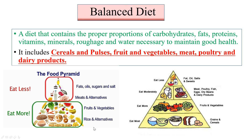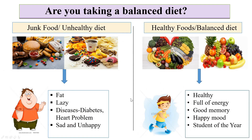Now we'll study about balanced diet. A balanced diet is one that contains proper proportions of carbohydrates, fats, proteins, vitamins, minerals, roughage, and water — all necessary to maintain good health. It includes cereals and pulses, fruits and vegetables, meat, poultry, and dairy products. For a balanced diet, eat more of grains, cereals, fruits, and vegetables, and less of fats, oils, sugars, and salt.